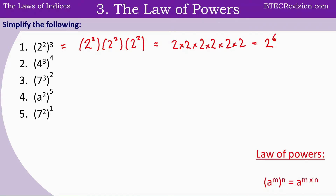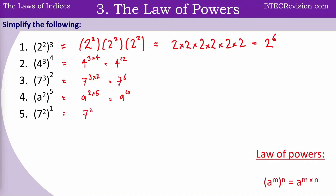Pause the video here and complete the rest of the questions. Question 2 is equal to 4 to the power of 3 times 4, which is 4 to the power of 12. Question 3, that's 7 to the power of 3 times 2, which is 7 to the power of 6. Question 4, that's 8 to the power of 2 times 5, which is 8 to the power of 10. Question 5, that's 7 to the power of 2 to the power of 1, so it's just 7 to the power of 2.